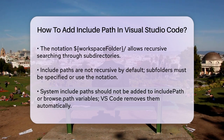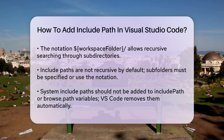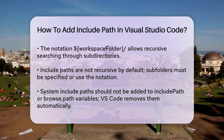It's important to note that the Include Path is not recursive by default, so if you need to include subfolders, you must specify them explicitly or use the /** notation to indicate a recursive search. Another key point is that System Include Paths should not be added to the Include Path or Browse.path variables. If you specify System Include Paths, VS Code will silently remove them to ensure they are added last and in the correct order, especially important for compilers like GCC and Clang.